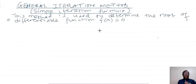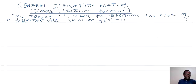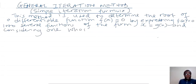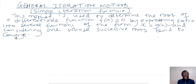This method is used to determine the root of a differentiable function f(x) = 0, by expressing f(x) = 0 into several functions of the form x = g(x), and considering one whose successive roots tend to converge. We need to know what converging means here in numerical analysis.